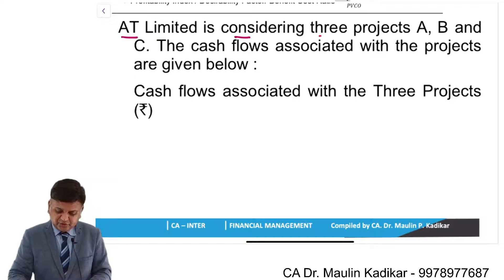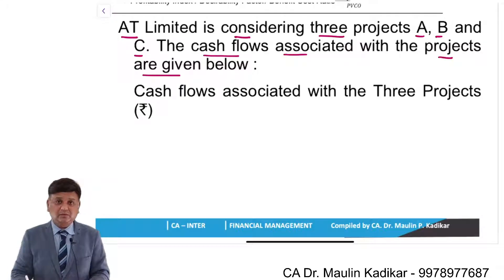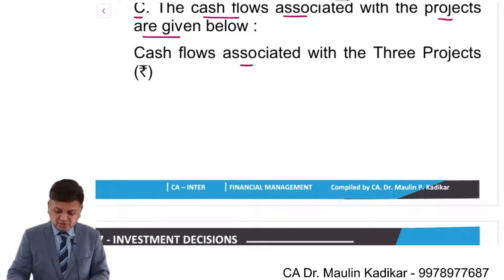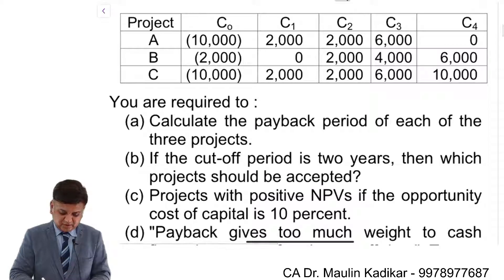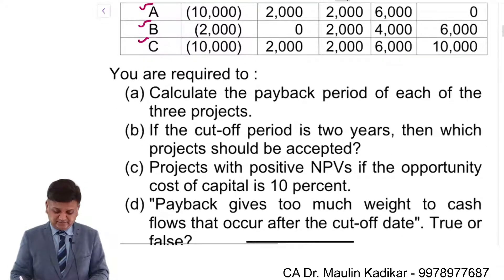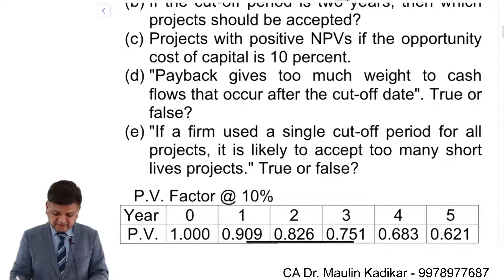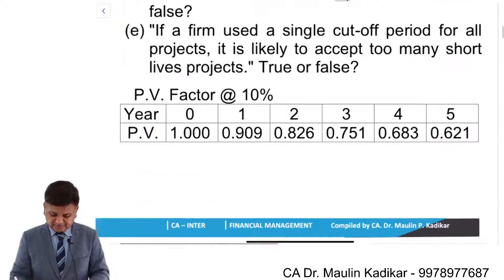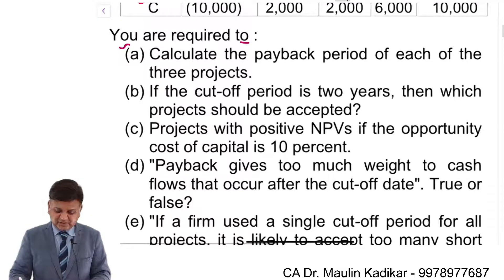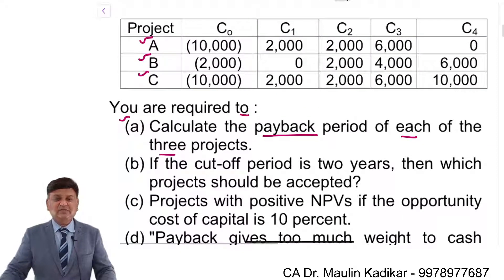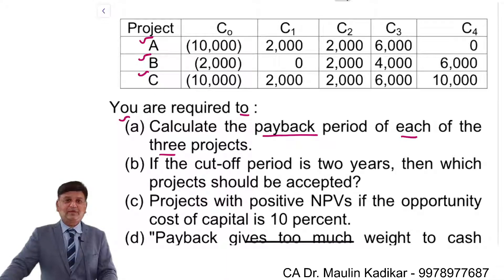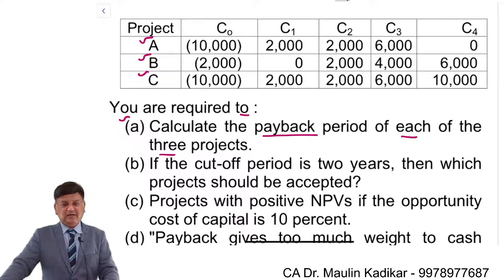AT Limited is considering three projects A, B and C. Cash flows associated with the projects are given. You are required to answer five questions. The first question is to calculate the payback period for each of the three projects. The language of the question is very clear — payback period, so we do not have to compute the discounted payback period.